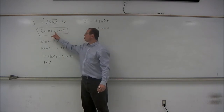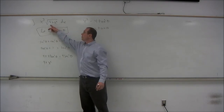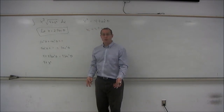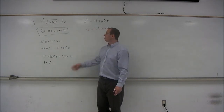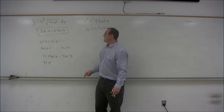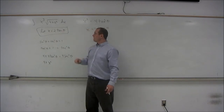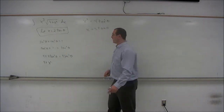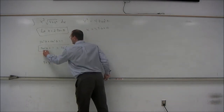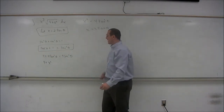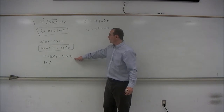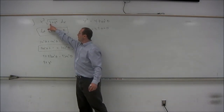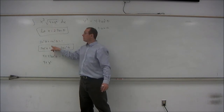So the idea is to make a trigonometric substitution so that the quantity under the square root becomes a perfect square. In this particular example, the choice of x will be x equals 2 times the tangent of theta. Looking at this identity is the key, and multiplying it by 4 is a nice step so that we can see the 4 there instead of a 1.